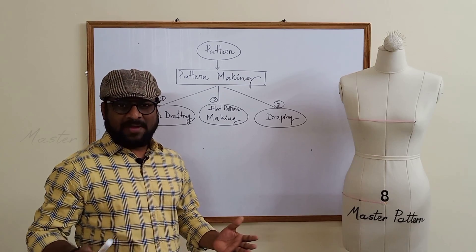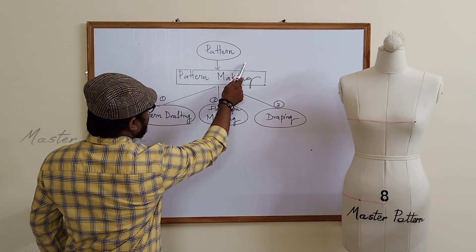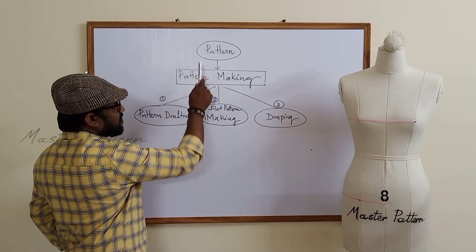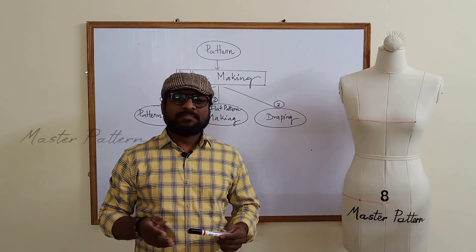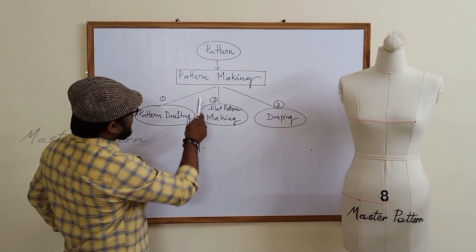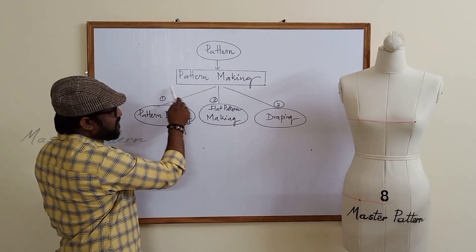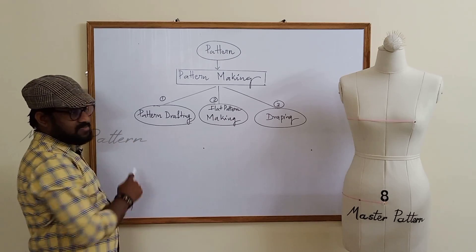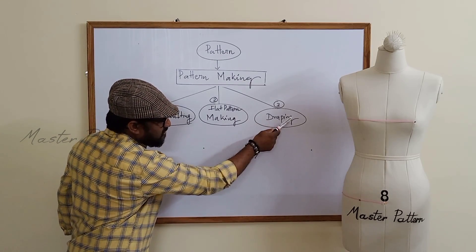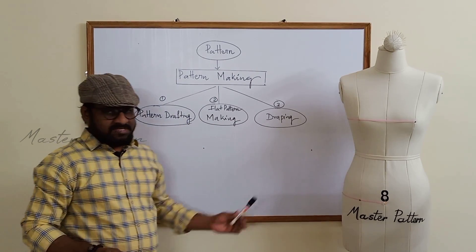Hi, myself Prabhakram Mandala, your master pattern. If you want to learn draping, here is your first class. Looking at the board, starting from pattern — pattern making has three different methods. Pattern is a template or blueprint of a design, form, or object. Developing a pattern is called pattern making. The three methods are: pattern drafting, flat pattern making, and draping. Our subject today is draping.